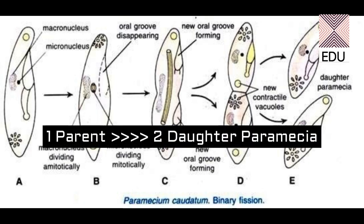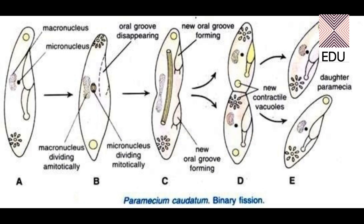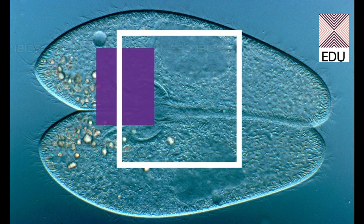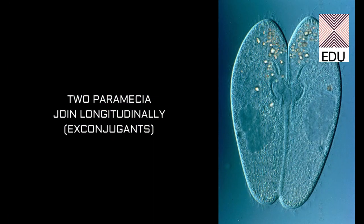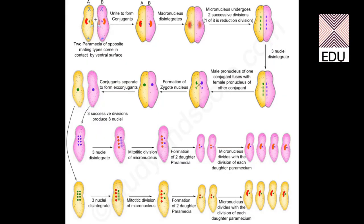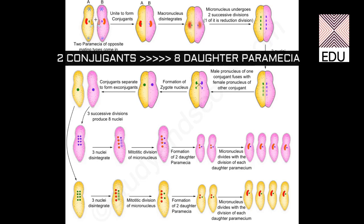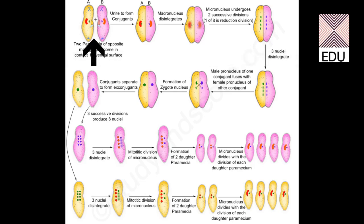This is binary fission — it makes two paramecia from one parent paramecium. The second method of reproduction is conjugation. Paramecium joins another paramecium, called conjugants, to undergo this process. This process is very important as far as population is concerned, as two conjugants can give rise to eight daughter paramecia. To increase their number, they prefer to go for conjugation, and since it involves union of two individuals, it is considered sexual reproduction.